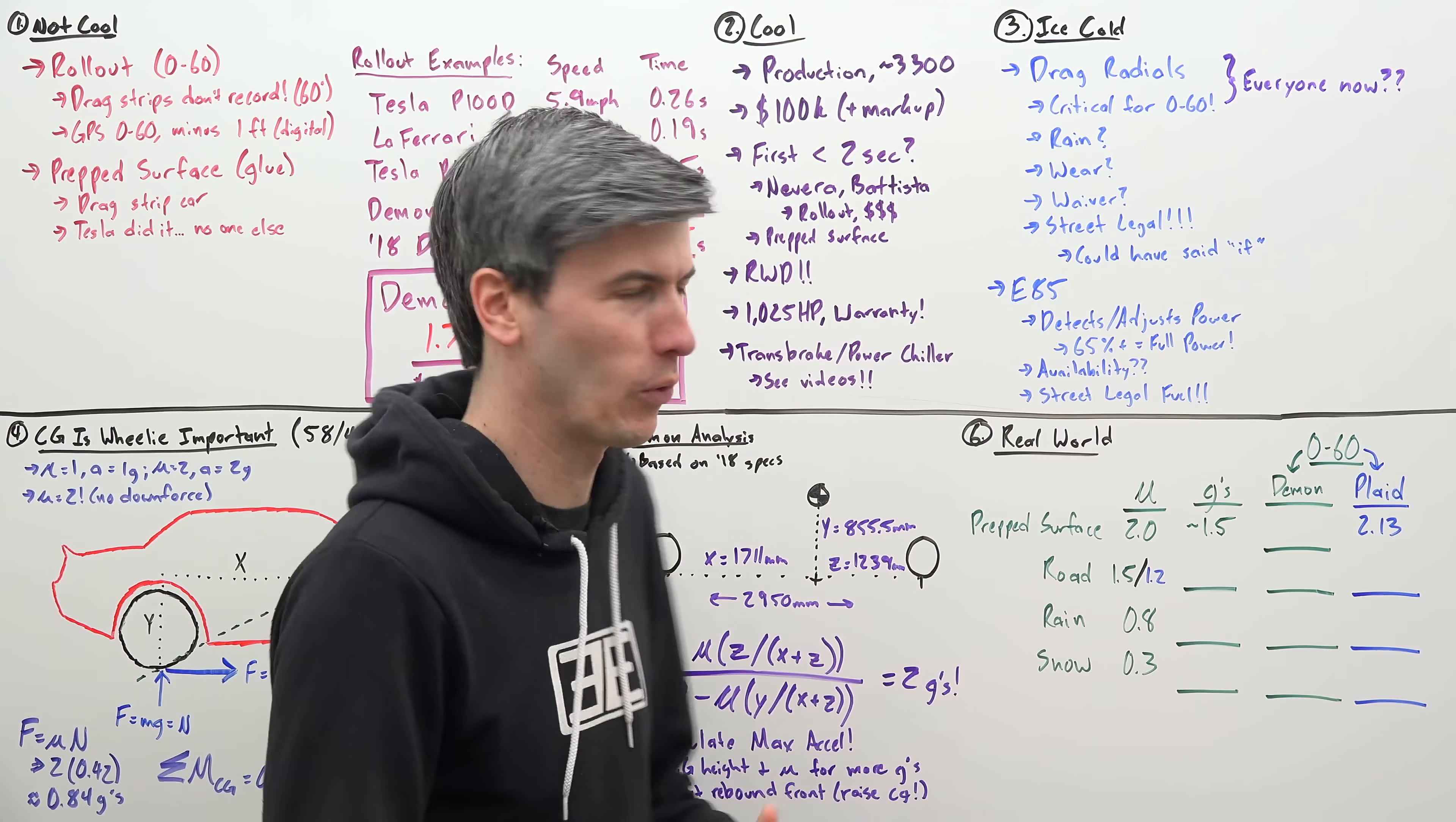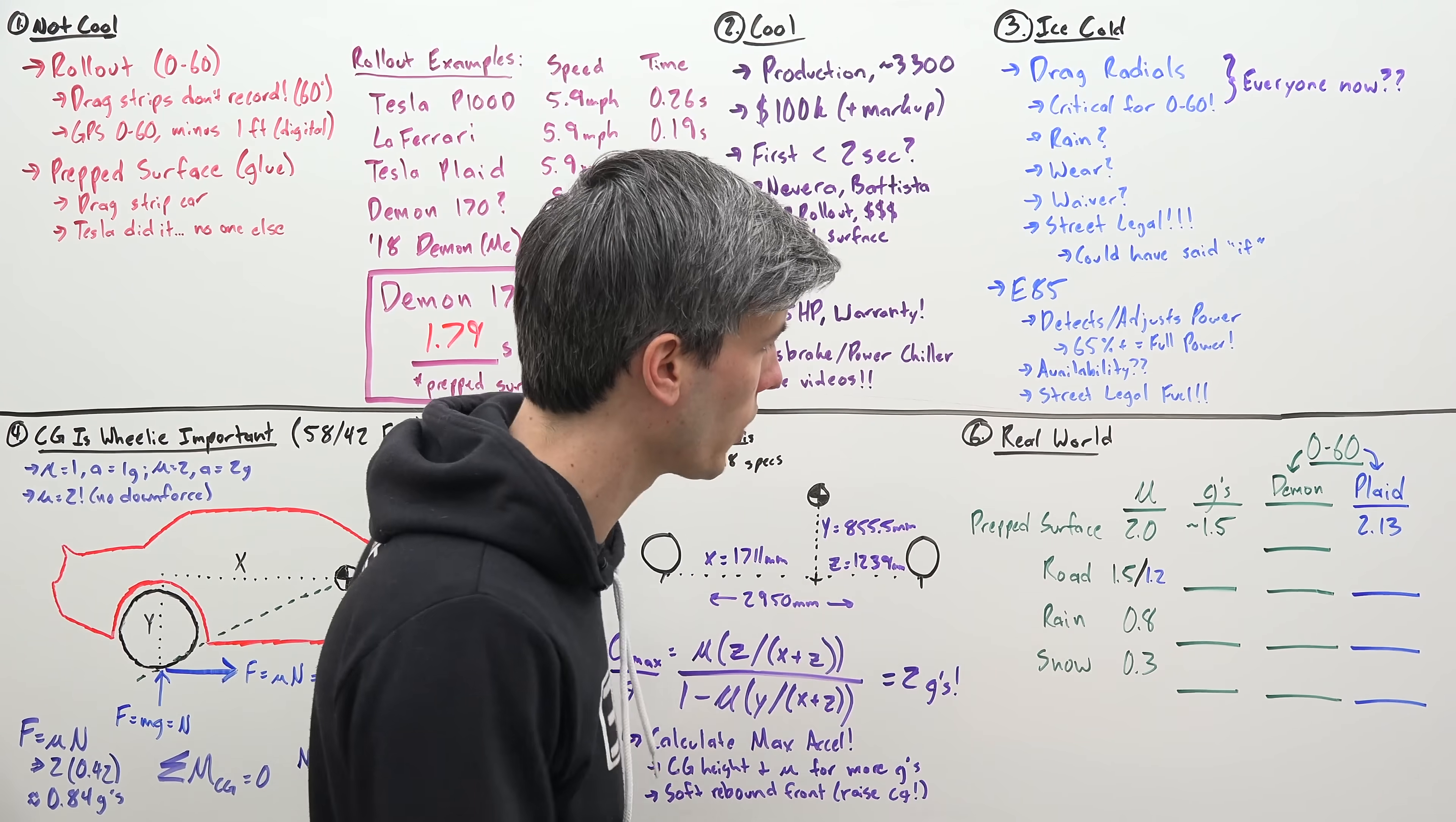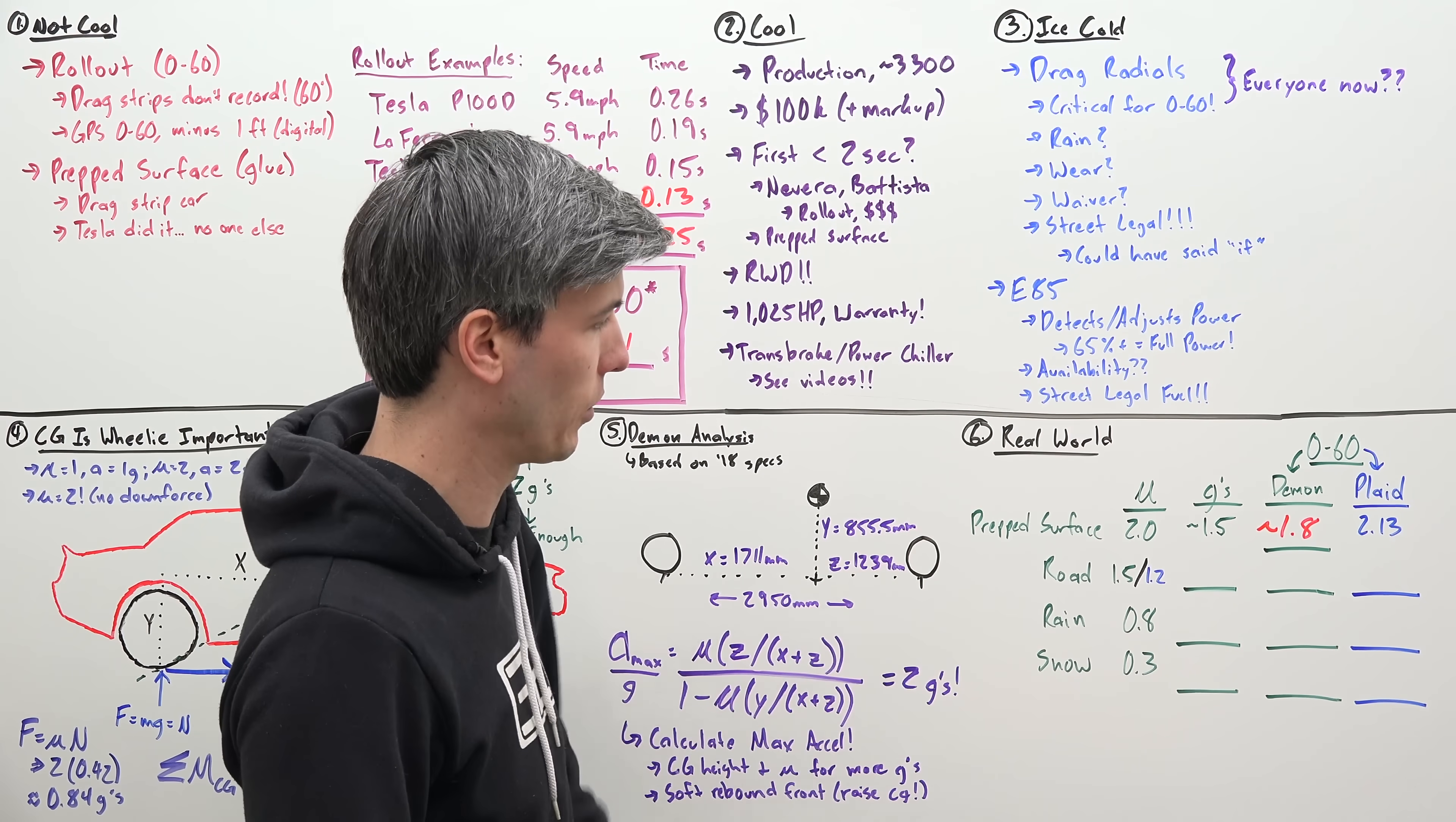Okay, so here's the really cool part where we use math to predict real world numbers. And this is going to illustrate why rear wheel drive is so challenging. So on a prep surface, knowing that we have a maximum frictional coefficient of two, the average acceleration of the Demon down that zero to 60 was 1.5 G's, absolutely bonkers, which gives it a zero to 60 of 1.8 seconds on a prep surface, which we had calculated earlier. Compare that to the Tesla Model S Plaid, which is at 2.13 seconds on a prepared surface. So significantly quicker than the Plaid, which is absolutely nuts.